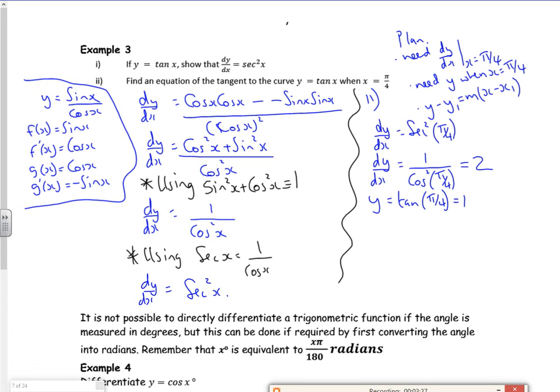So I'm going to use pi by four comma one and a gradient of two. So I've got y minus one is equal to—no, no, it isn't—y minus one is two lots of x minus pi by four. Job done. It doesn't say in any other form, so just leave it like that.